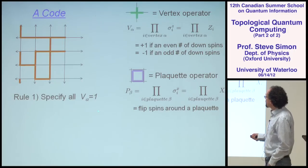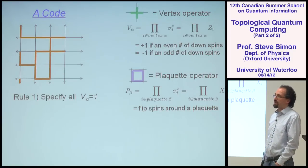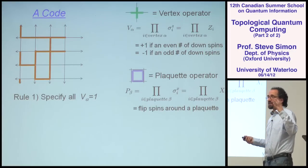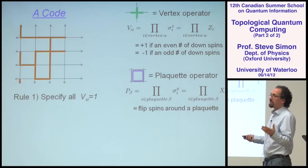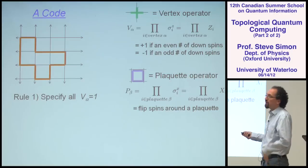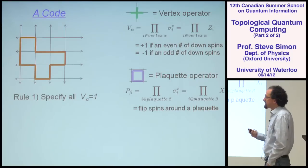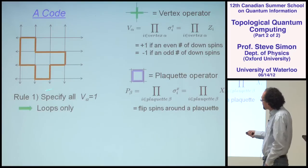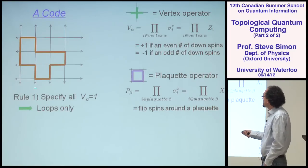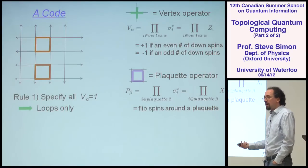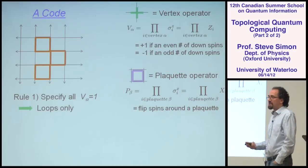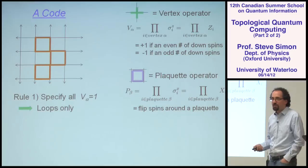Let's construct our code. The first rule is to specify that all the vertex operators are in the plus one eigenstate. This means the red bonds have to always come in an even number into each vertex. In this configuration, each vertex has either two or zero red bonds coming into it, so all vertices are in the plus one eigenstate. What we're really specifying is that all allowed configurations are loops — you can trace that these things are actually forming loops.